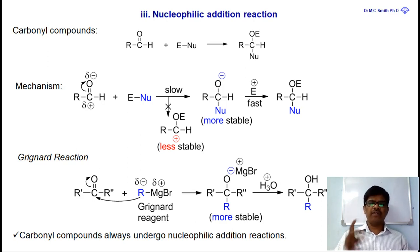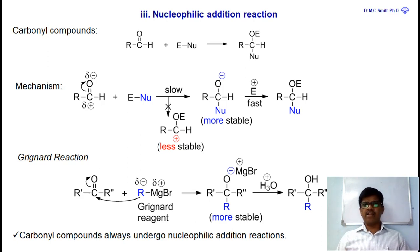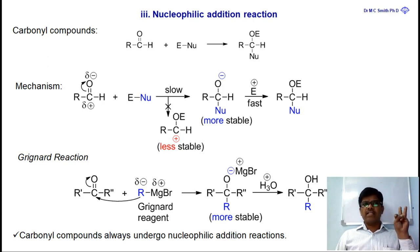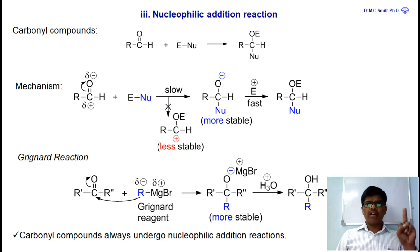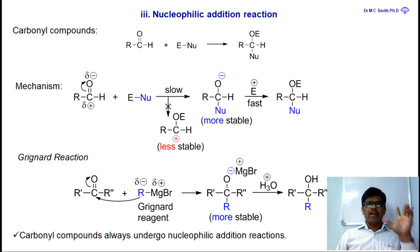To summarize addition reactions: they are of three types — free radical addition, electrophilic addition, and nucleophilic addition. Two important points to remember: alkenes always undergo electrophilic addition reactions, and carbonyl compounds always undergo nucleophilic addition reactions.